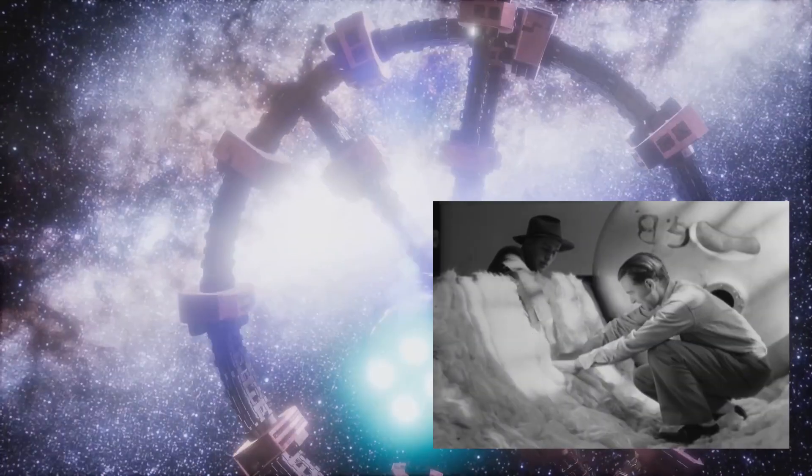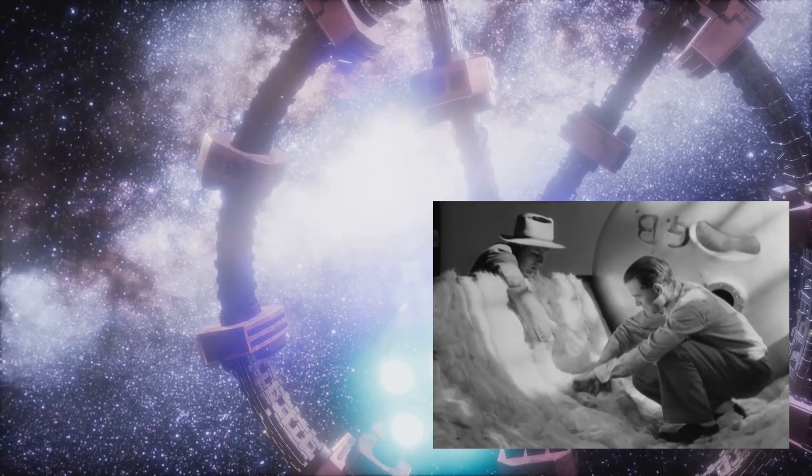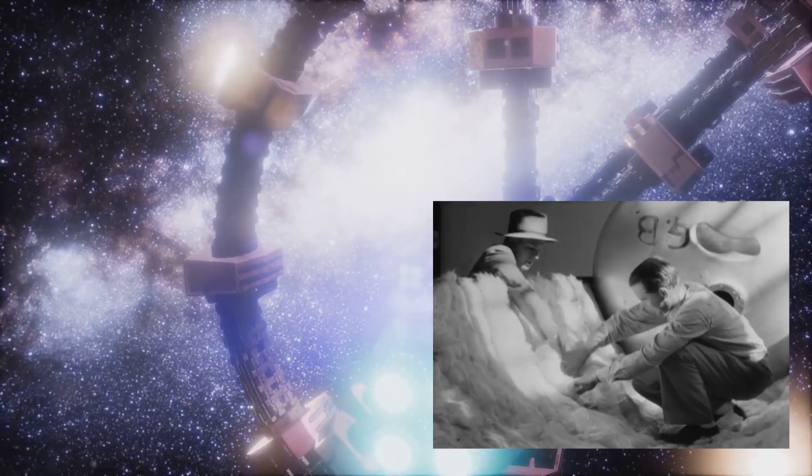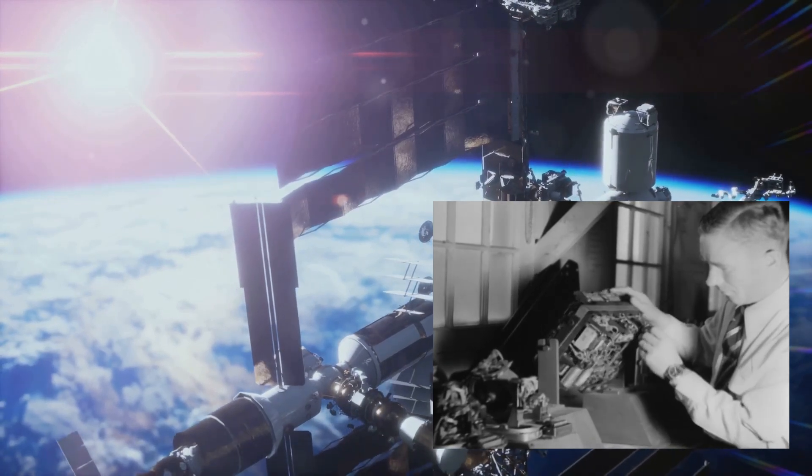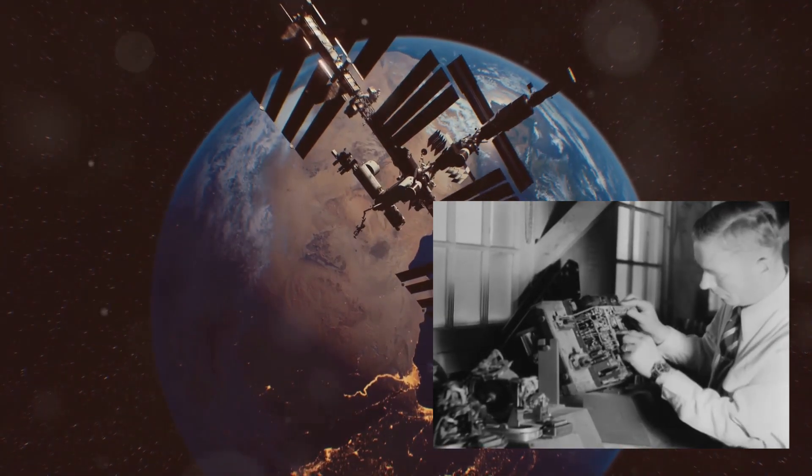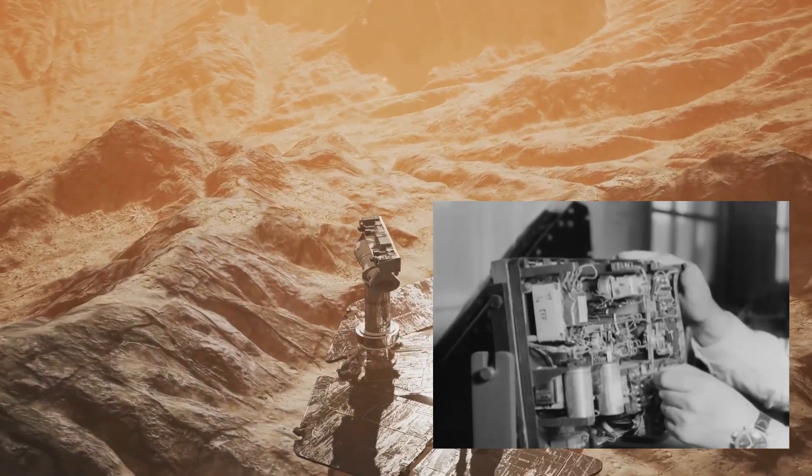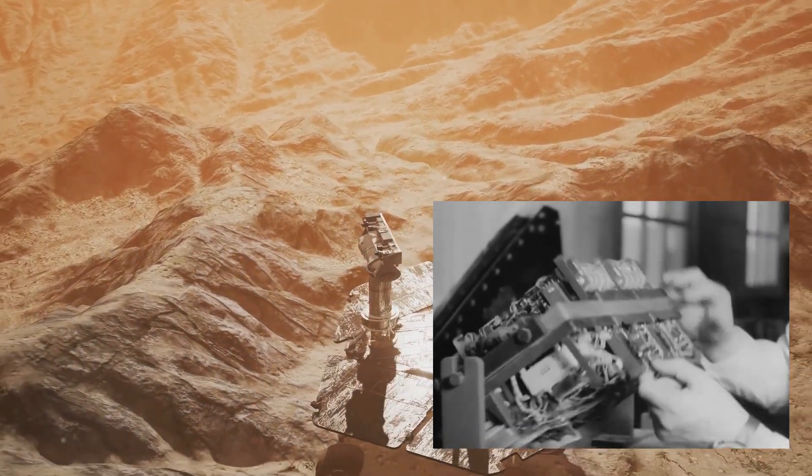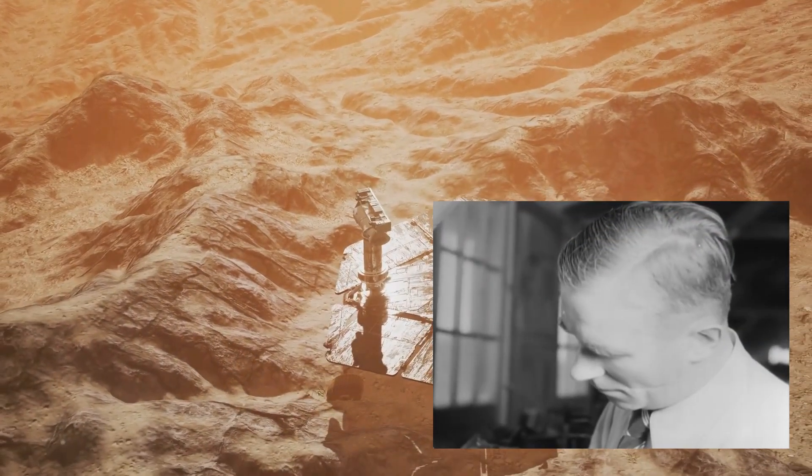Wernher von Braun's vision extended far beyond the moon. He saw space exploration not as an end goal, but as a stepping stone to a future where humanity would establish a permanent presence among the stars. He envisioned sprawling space stations orbiting Earth, serving as platforms for scientific research and further exploration of the solar system. Mars, the red planet, held a particular allure for von Braun.